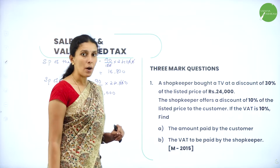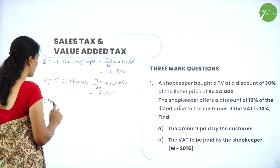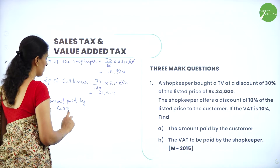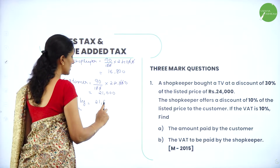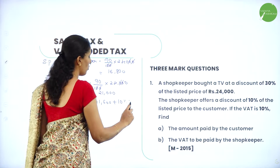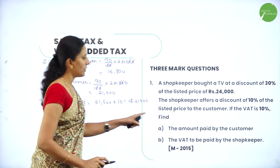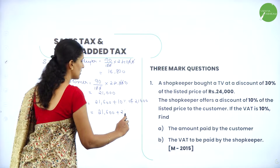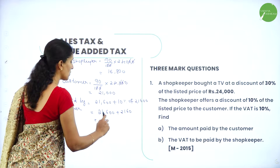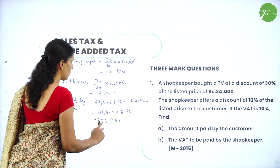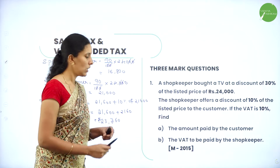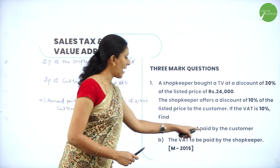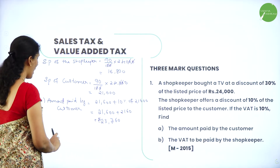Now let us calculate the total amount paid by the customer. That is equal to 21,600 plus 10 percent of 21,600, because we have 10 percent VAT on the selling price. So that equals rupees 23,760. This is the amount paid by the customer, which includes the selling price plus VAT at 10 percent.